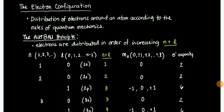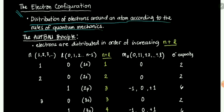In this video, I'll discuss the electron configuration. Electron configurations are representations or illustrations of the distribution of electrons around a certain atom. This follows rules of quantum mechanics.